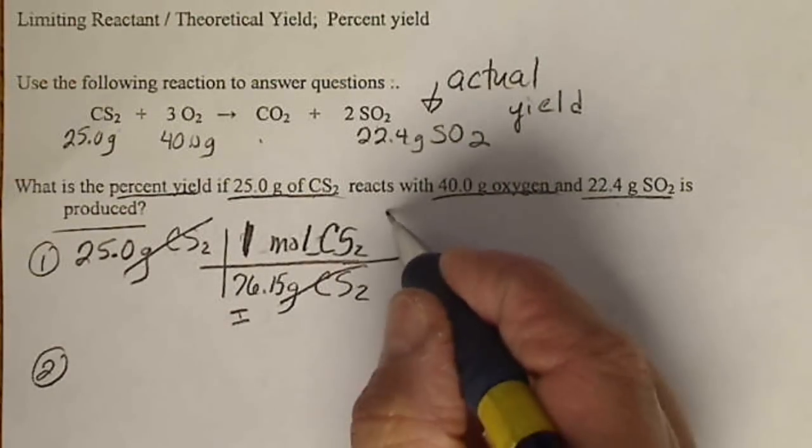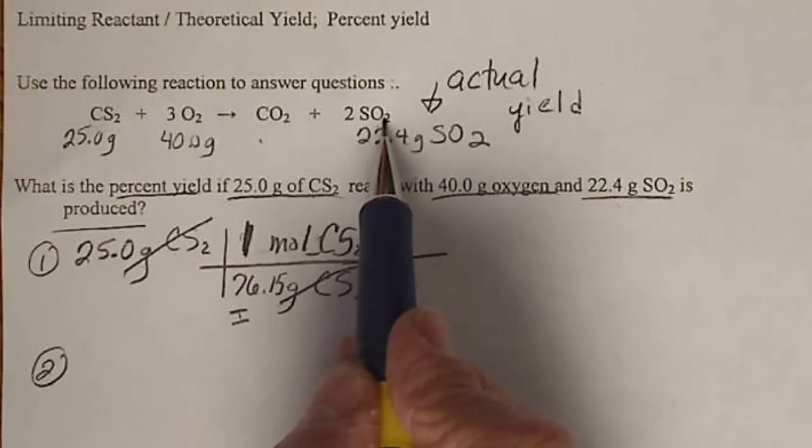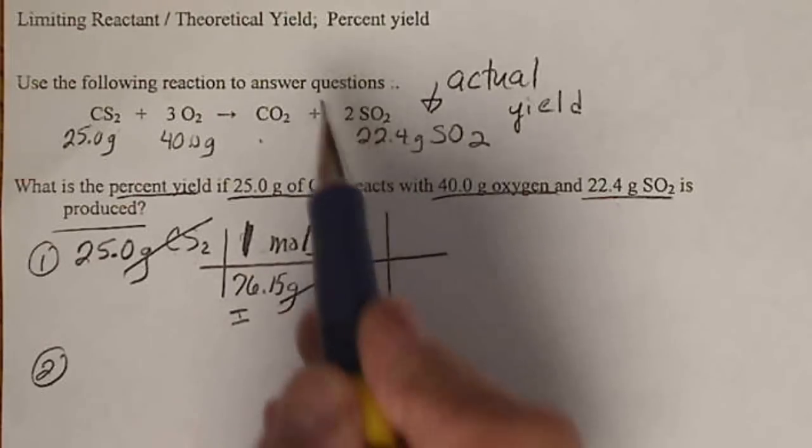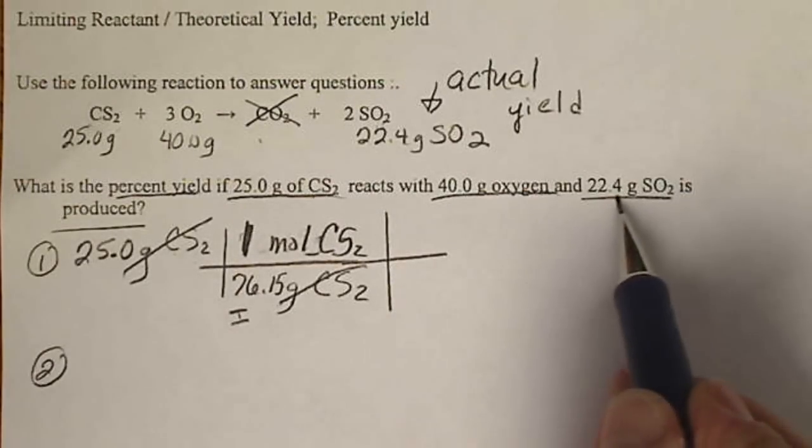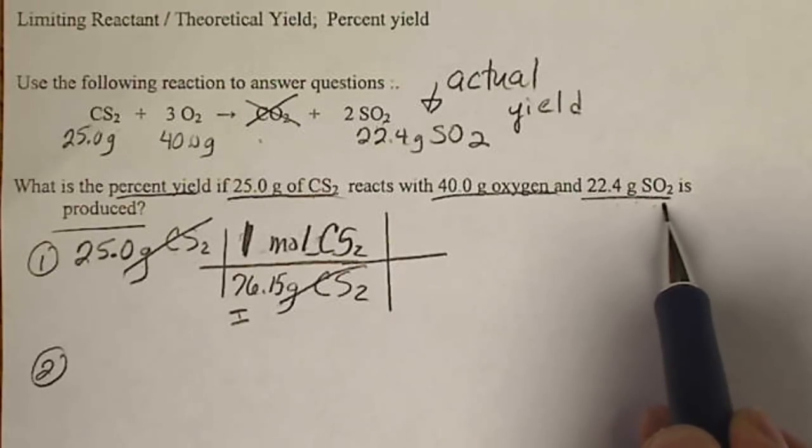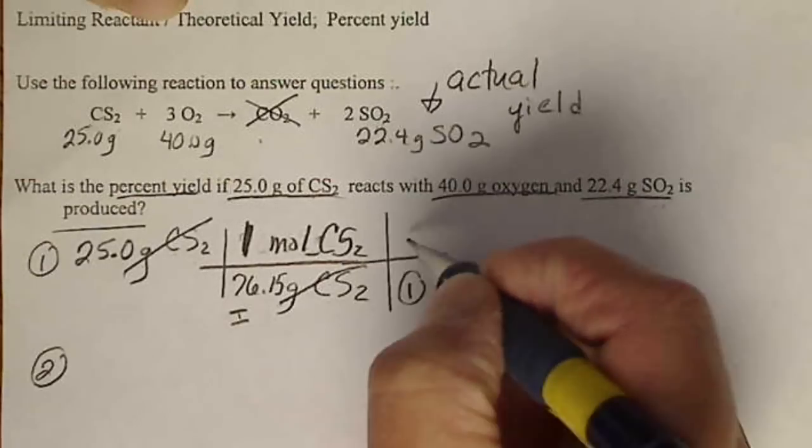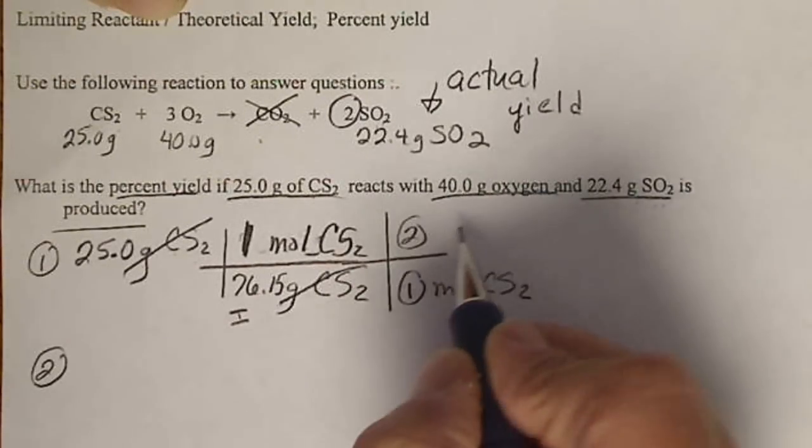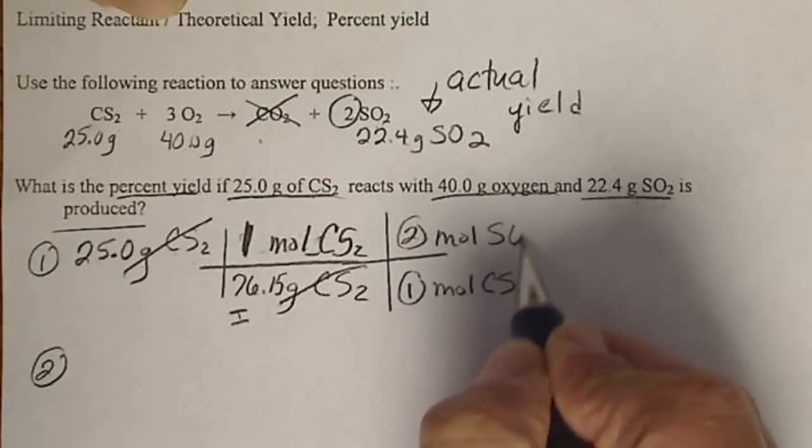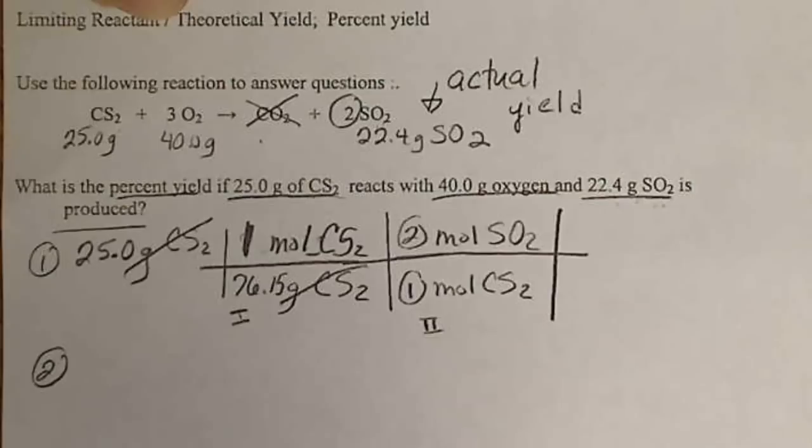Now we're going to go to the balanced equation. One mole of CS2 produces two moles of SO2. We don't care about the carbon dioxide. The ratio is 1 to 2, so 1 mole of CS2 makes 2 moles of SO2. That is step 2, the balanced equation.